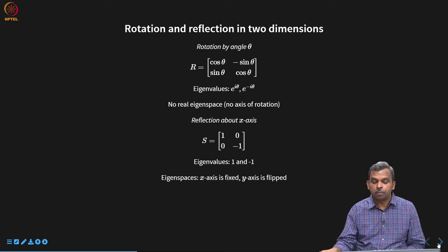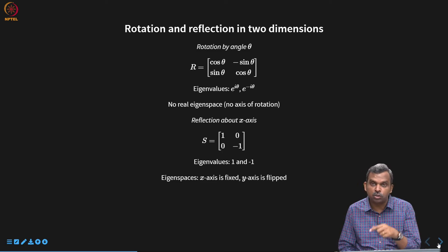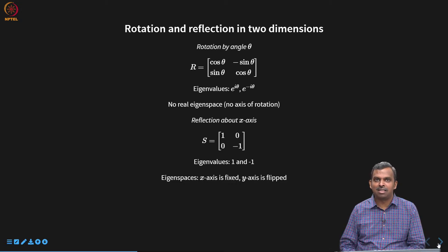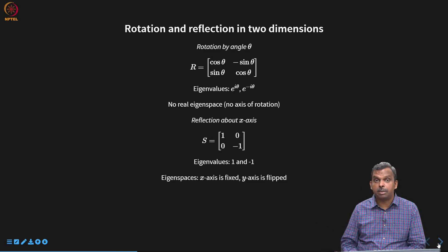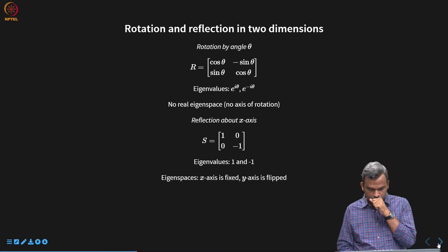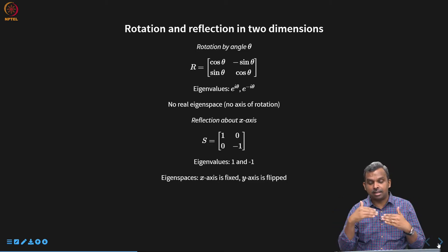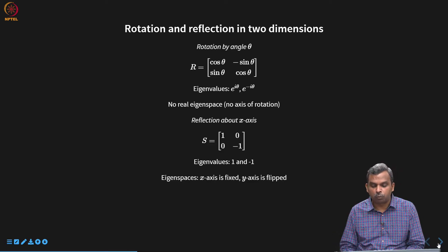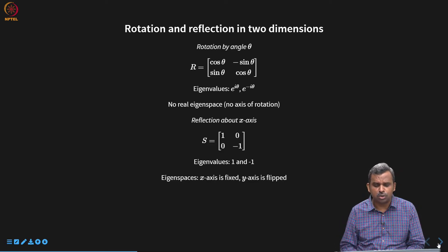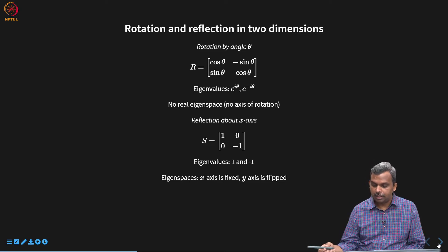Another example is reflection about a line, such as the matrix diag(1, −1), which is reflection about the x-axis: x goes to x, y goes to −y. This has a proper eigenspace representation — the x-axis is an eigenspace with eigenvalue 1 (fixed), and the y-axis is an eigenspace with eigenvalue −1. Both rotation and reflection are isometries in 2D: the output norm equals the input norm.